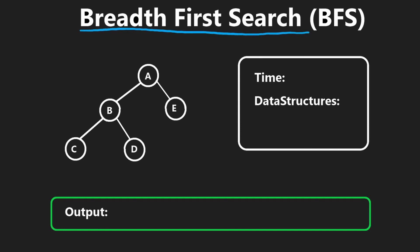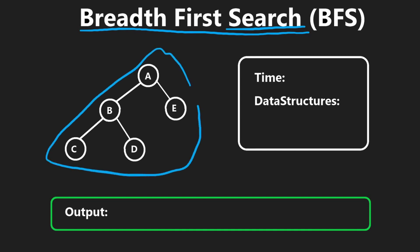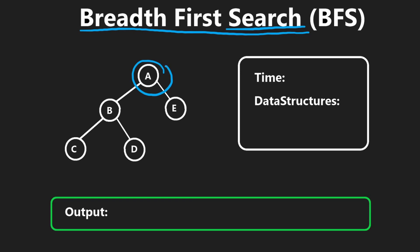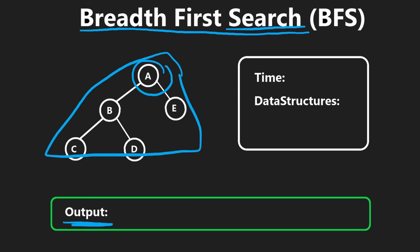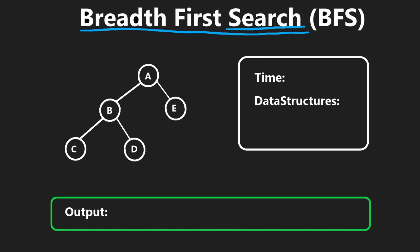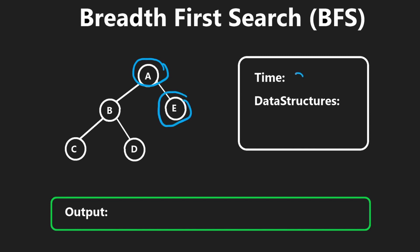Our second algorithm is BFS, or breadth first search. Like DFS, it's a searching algorithm designed to traverse a graph, but it traverses nodes in a different order. The time complexity is the same as DFS — O(n) — because we visit each node at most once, where n is the number of nodes in the graph.